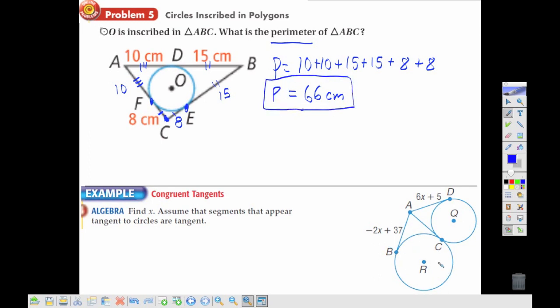On the bottom, notice these two circles, and first if we look at the larger circle with R, we would see that these two are the same. If we look at the smaller circle with Q, we would notice that these two are tangents, so they are the same.